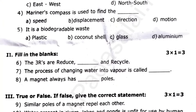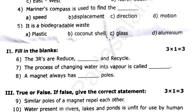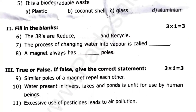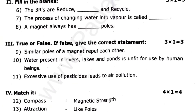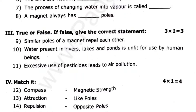The magnet always has DAS poles. Next one is true or false: similar poles of a magnet repel each other; water in rivers, lakes and ponds is unfit for use by human beings; exclusive use of predictions leads to air pollution. True or false — give the correct answer.